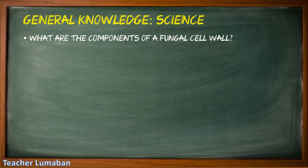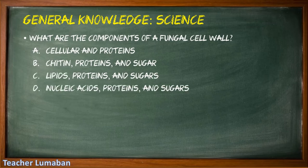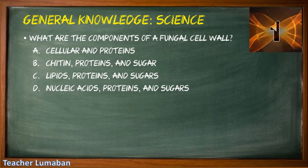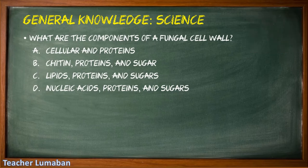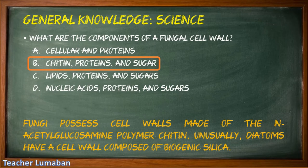What are the components of a fungal cell wall? Letter A: cellular and proteins, Letter B: chitin, proteins, and sugar, Letter C: lipids, proteins, and sugars, Letter D: nucleic acids, proteins, and sugars. The correct answer is Letter B: chitin, proteins, and sugar. The components of a fungal cell wall are chitin, proteins, and sugar. Fungi possess cell walls made of the N-acetyl glucosamine polymer chitin. Unusually, diatoms have a cell wall composed of biogenic silica.